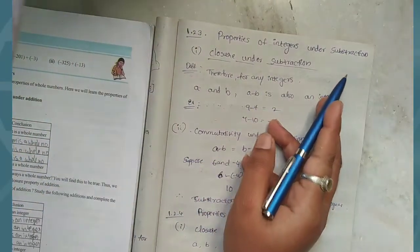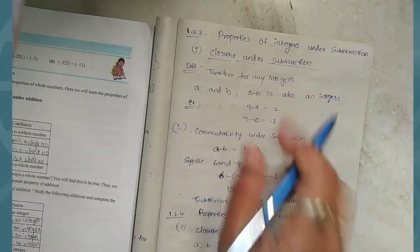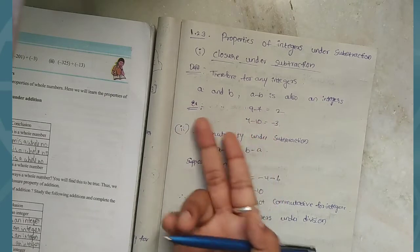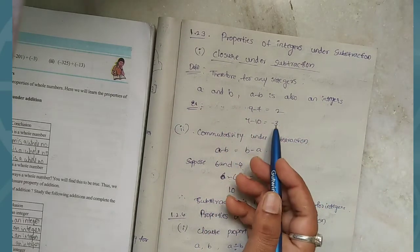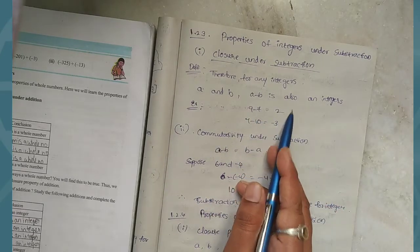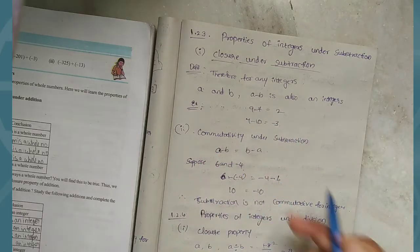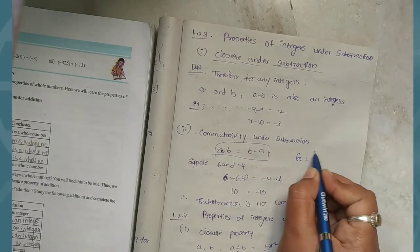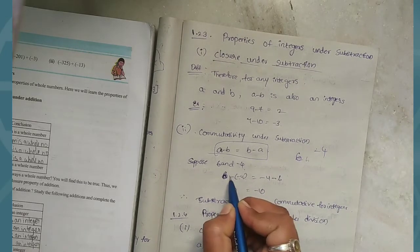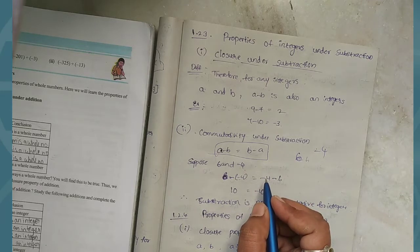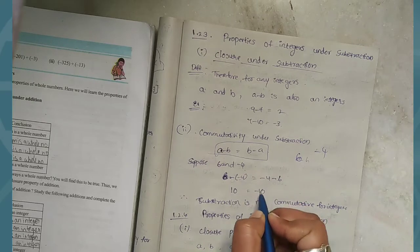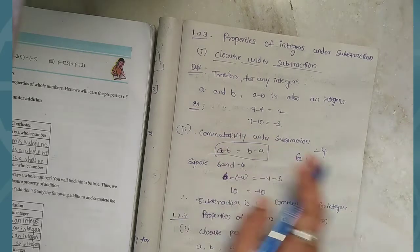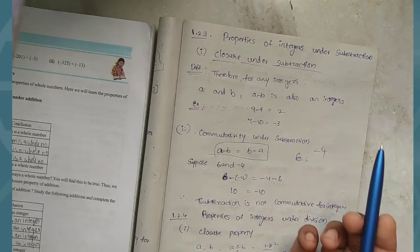Next, properties of integers under subtraction. Closure property: for any two integers a and b, a minus b is also an integer. For example, 6 minus (minus 4) equals 10, which is an integer. This condition is satisfied.